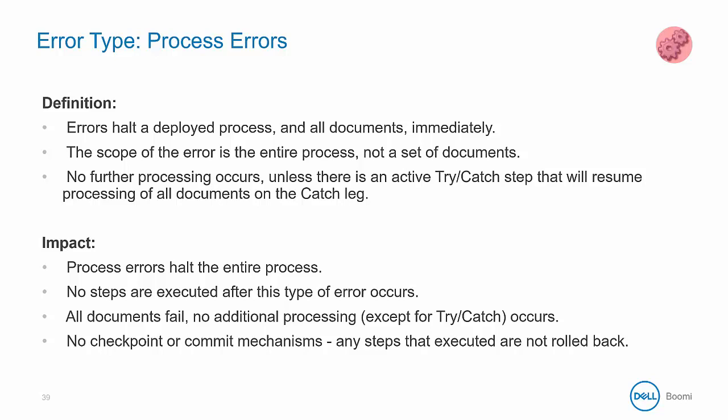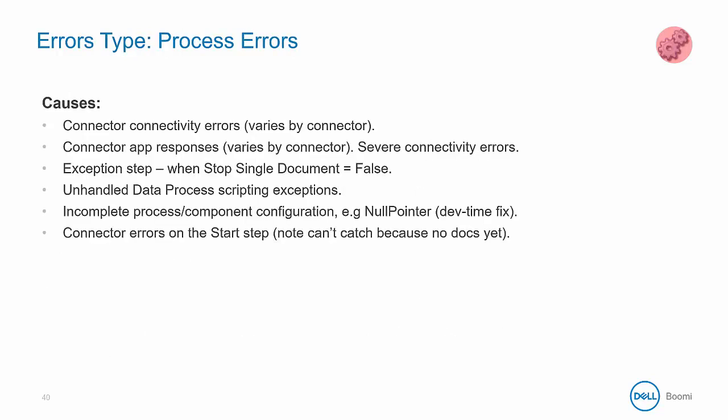After a process error occurs, no other steps are executed and the entire process is halted. All documents fail, and it's very important to note that there is no checkpoint or commit mechanism, so any steps that did successfully execute prior to the error shape are not rolled back. The way to address this is to have some sort of external mechanism to do so. Process errors are caused by connectivity errors on your connectors — for example, being unable to connect to a database due to an invalid login or password.